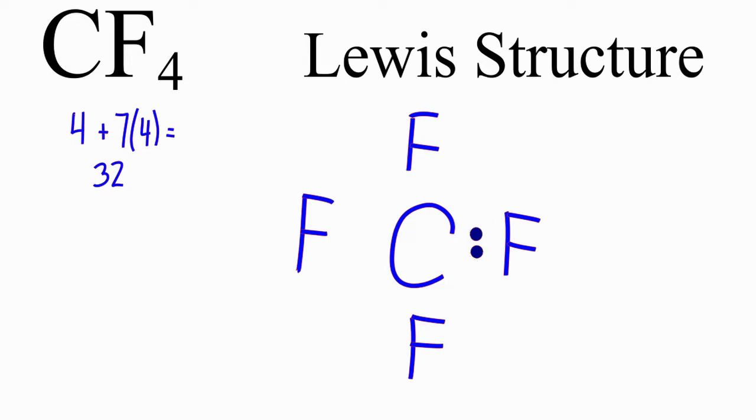Put 2 here, 2 here, and we've used 8 total valence electrons now, and we've formed bonds between the carbons and the fluorines.